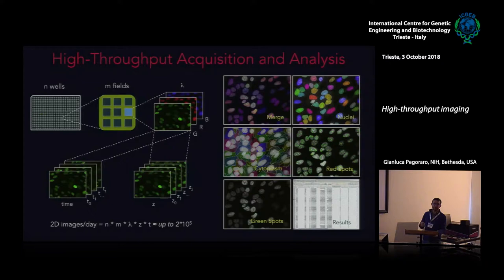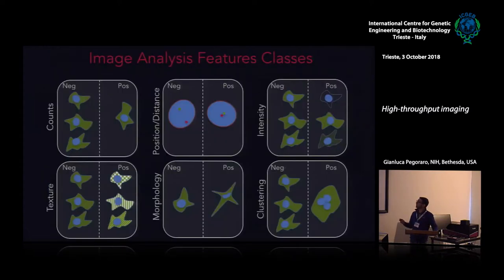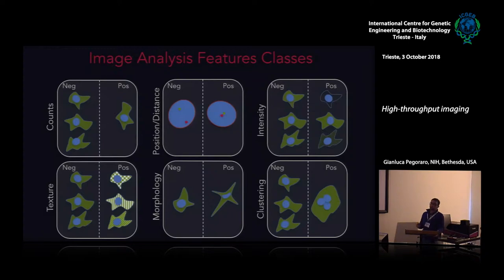These cellular features are nothing but numbers — we are measuring properties of the cells. These image analysis features tend to fall into six main classes.